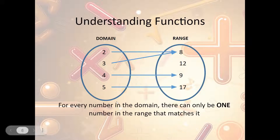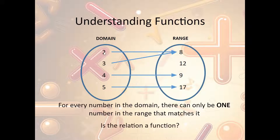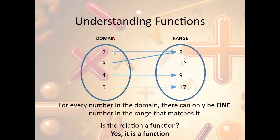For every number in the domain, there can only be one number in the range. In this example, both 2 and 3 map to 8. Is that okay? Yes — this is still a function, because 2 is only mapped to one place (8), and 3 is only mapped to one place (8). It doesn't matter that they're both going to the same place. The issue would only be if one x mapped to two different places.